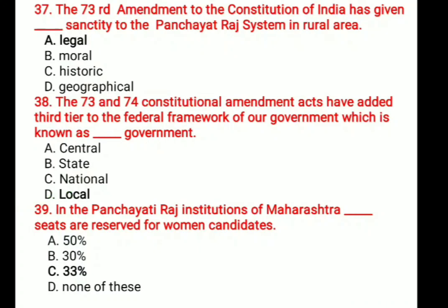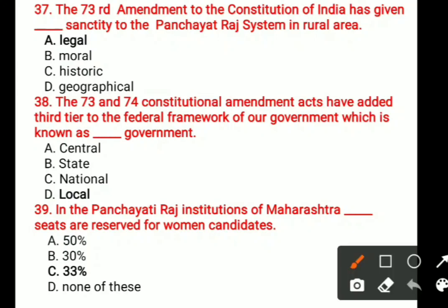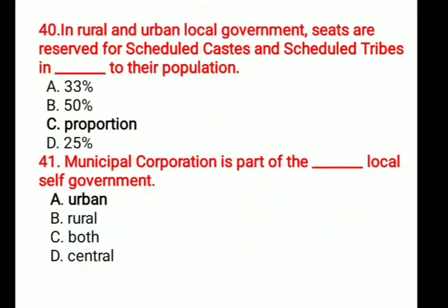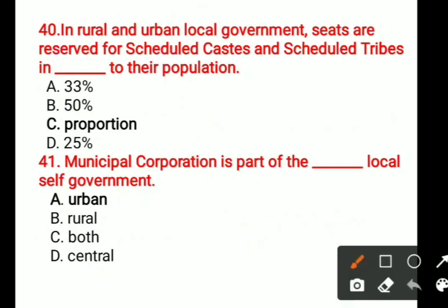Question number 39: In the Panchayat institutions of Maharashtra, blank seats are reserved for women candidates. Options are: 50 percent, 30 percent, 33 percent, None of these. The correct answer is 33 percent. Question number 40: In rural and urban local government, seats are reserved for Scheduled Castes and Scheduled Tribes in proportion to their population. The correct answer is proportion.